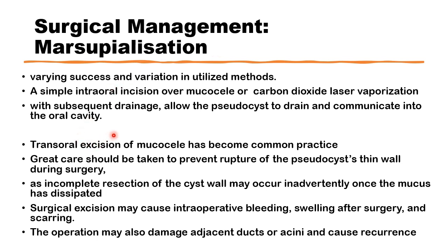That is why transoral excision rather than just marsupialization remains the most common practice. Great care should be taken to prevent rupture of the cyst during dissection, as this is the main cause of recurrence — incomplete resection. Once the cyst ruptures it becomes difficult to completely remove it because the cyst wall is very thin. Surgical excision can cause intraoperative bleeding, postoperative swelling, scarring, and fibrosis. The operation may also damage adjacent minor salivary gland ducts or acini, causing further recurrence or a new crop of mucoceles.